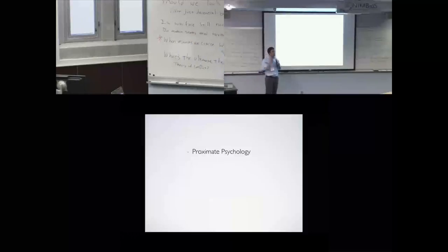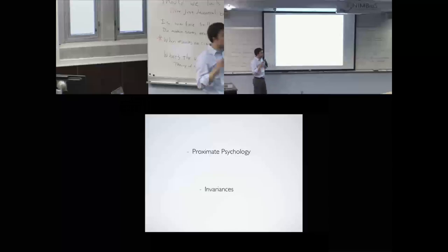Natural selection has designed proximate psychology that allows human beings to navigate coalitional conflicts. Natural selection is dealing and has dealt with the same problem we are all dealing with, which is that there's lots of superficial variation among coalitional conflicts.